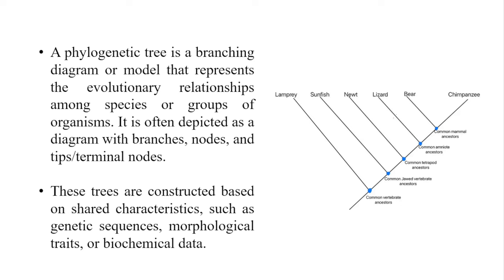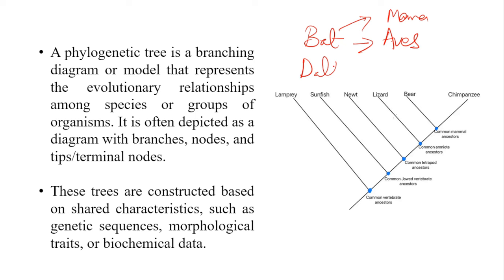Before the discovery of DNA, Charles Darwin and many other people worked on the construction of phylogenetic trees based on phenotypic traits. In that approach, many errors happened. For example, bats — because of their phenotypic traits — were categorized into the birds family, but bats are mammals. Similarly, dolphins were also categorized into fishes, but dolphins are also mammals.